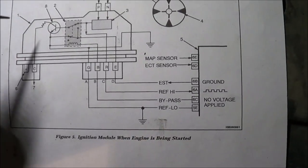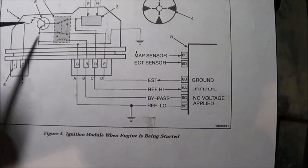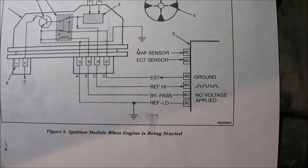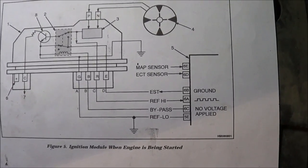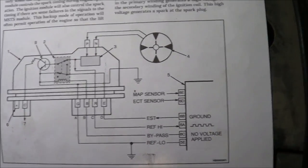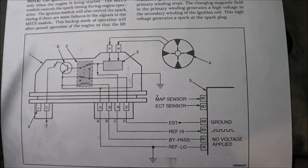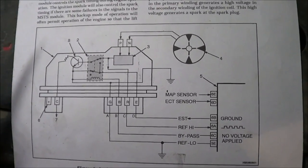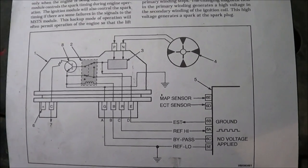Once those pulses reach 400 RPM, then it's going to send a bypass signal to the ignition module to transfer the control of that transistor to the ECM directly. Now what happens if for example you have a no start?